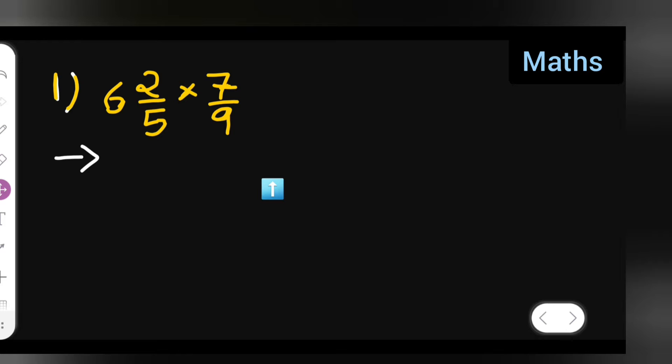The question is from both 6th standard and 7th, both grades. First, take down the question: that is 6 and 2 upon 5 multiplied by 7 upon 9.